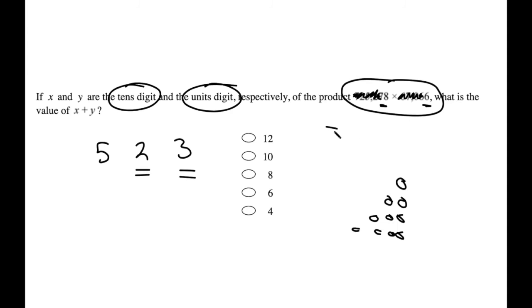So I can just take this and do 78 times 66 on my calculator. I think that gives me something like 5148. And look at the last 2 digits, 8 and 4. 8 plus 4 is 12. So A is the answer.